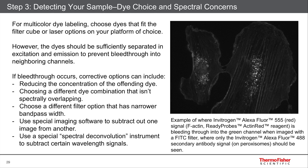So what do you do about this? First off, you can reduce the dye concentration of the offending dye. In this image, I would want to reduce the concentration of the Alexa Fluor 555 such that it's not as bright and thus doesn't bleed through as much. Another choice is to use a different dye combination — instead of Alexa Fluor 555, choose a dye that's farther away from the green, such as Alexa Fluor 594, which is in the Texas Red wavelength, or even a far-red dye like Cy5.